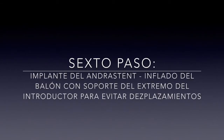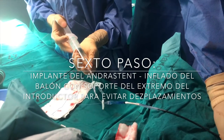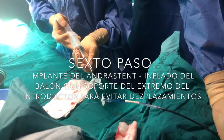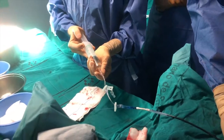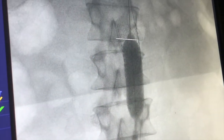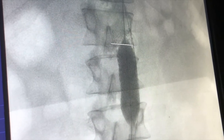Sixth step: understent implantation. Inflation of the balloon with support at the tip of the introducer to avoid distal stent migration.